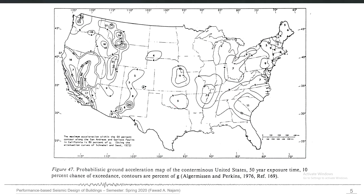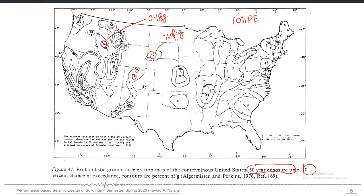These are the results of seismic hazard assessment for the U.S. in 1976. The numbers represent peak ground accelerations expressed as percentage of g — for example, 18 means 0.18g. You can multiply by the acceleration due to gravity in any units to convert to acceleration units. These contours show peak ground acceleration corresponding to a 50-year exposure time and 10% chance of exceedance. This is the standard definition of seismic hazard: 10% probability of exceedance in the next 50 years.